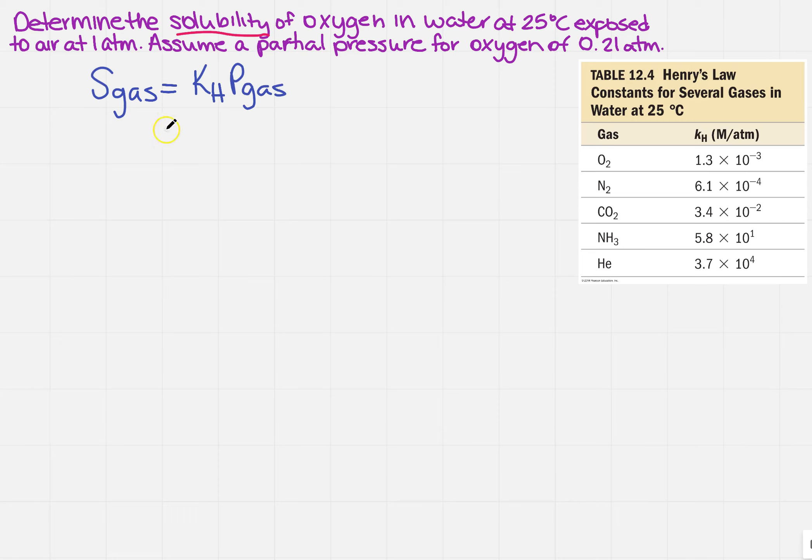So I need K sub H, which I'm going to get from the chart over here on the right. You may need to find a chart in your own textbook if it's not the one that's used in this video. So it says oxygen. So oxygen is this 1.3 times 10 to the minus third.